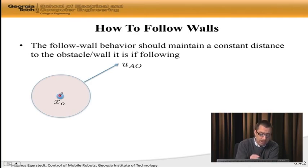Well, avoid obstacle is going to tell me I want to move straight away from this obstacle. How do I go in order to maintain a constant distance from this obstacle? Well, what I need to do is I need to flow along the boundary of this region.